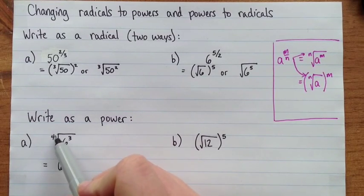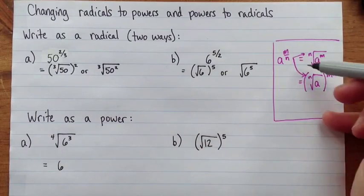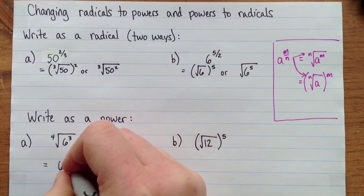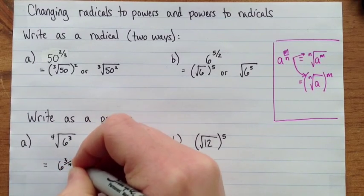And then the root here is going to be the denominator. So we're just going backwards here like this. So this is going to be six to the exponent three quarters.